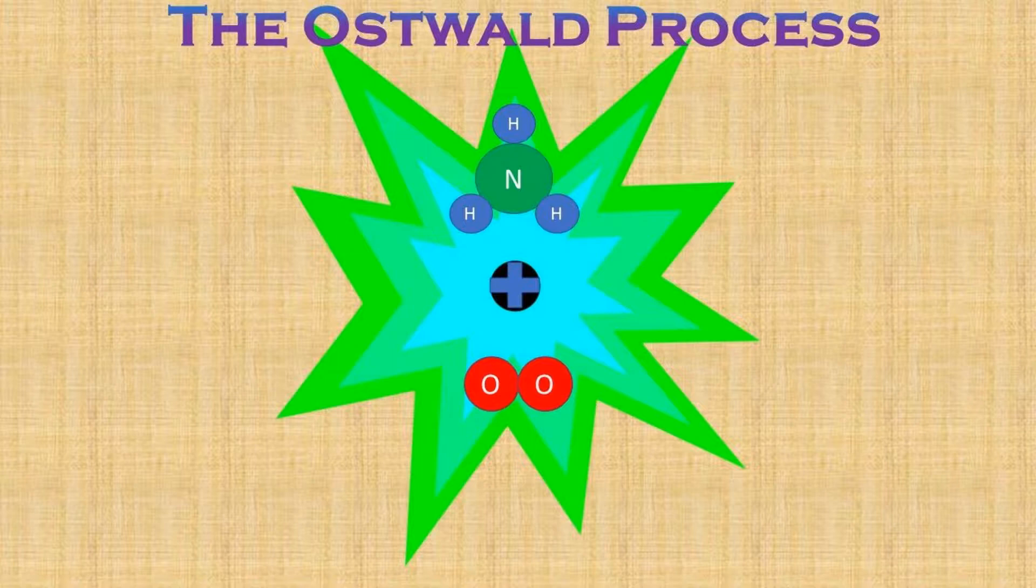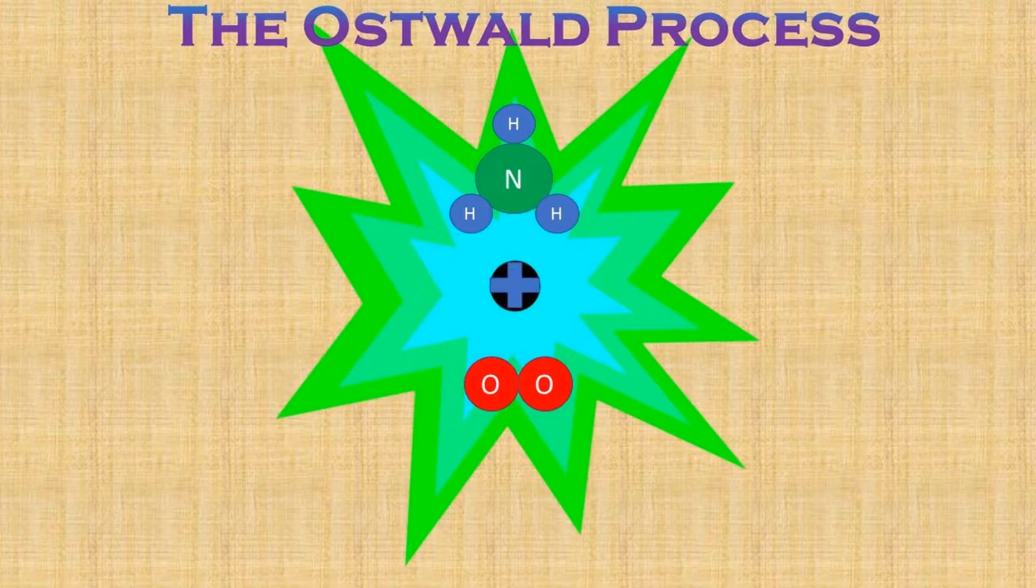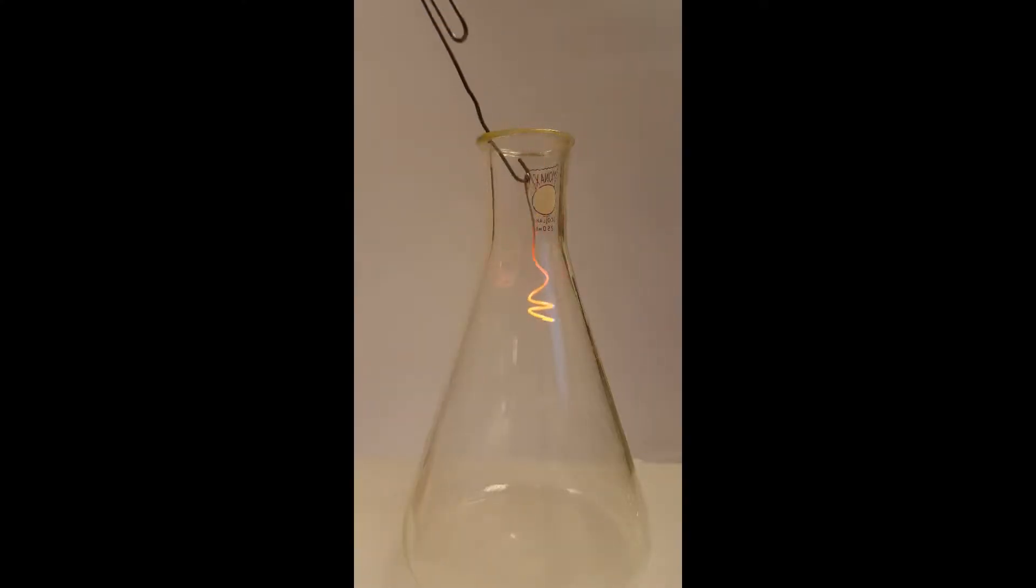You can see this in the following experiment. A heated piece of platinum wire is lowered into a flask containing ammonia and air. You would expect the wire to cool down rapidly, but as you can see it continues to glow.